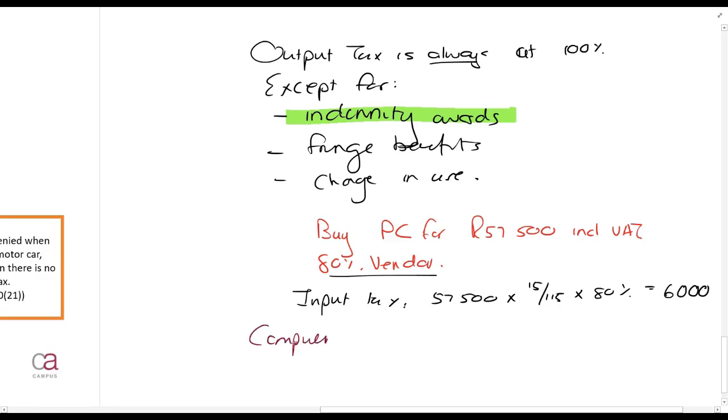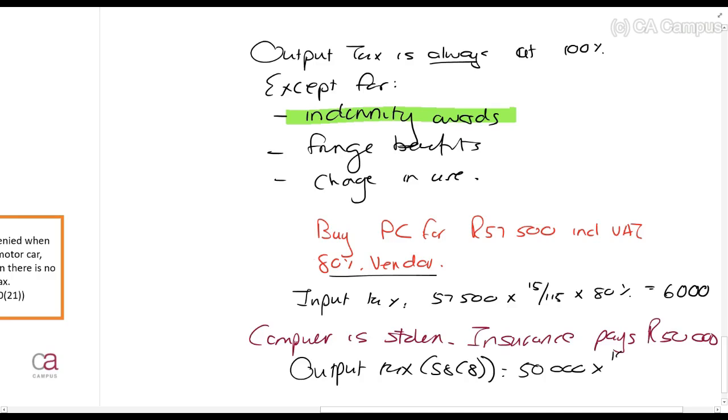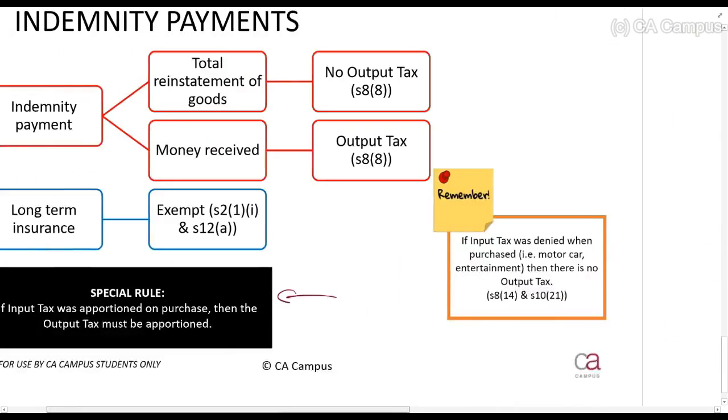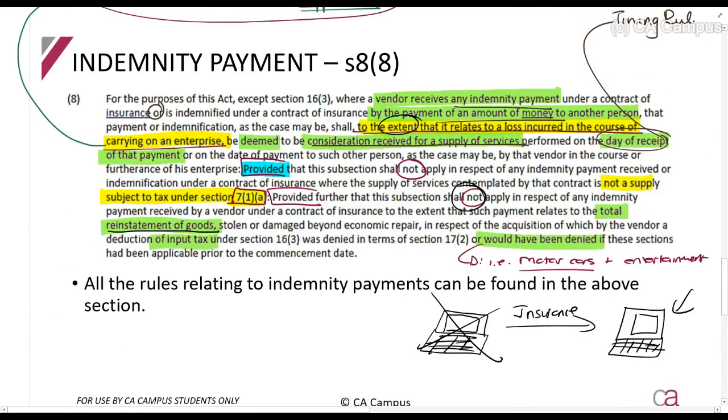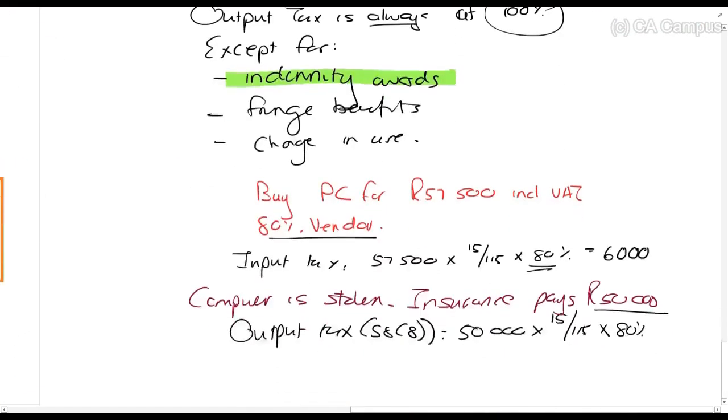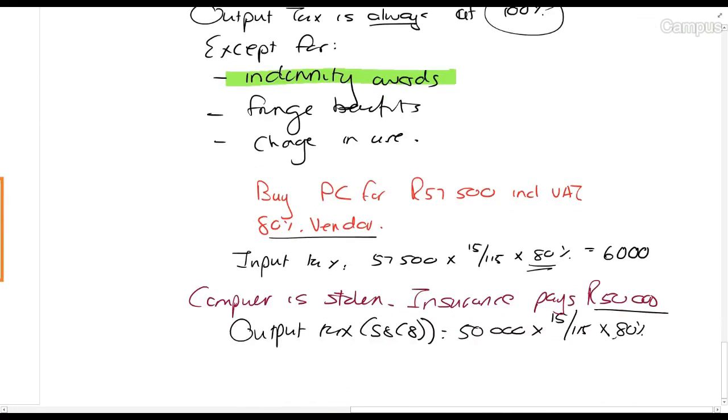Now computer is stolen. Insurance pays, let's say, 50,000 rands out. I will then calculate output tax in terms of section 8.8 on that. And that will be 50,000. You always take the amount that you receive from insurance as if it includes VAT. So times 15/115. And usually, guys, VAT will be calculated 100% here. But now we will say times 80% because section 8.8 tells us to the extent that it relates to a loss incurred in the course of carrying on an enterprise. Now if I am an 80% vendor, 20% is exempt. It means only 80% is an enterprise. So that's why we have to do that.